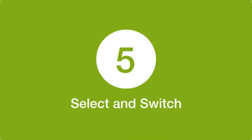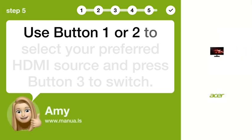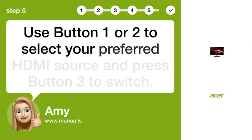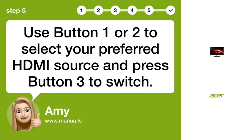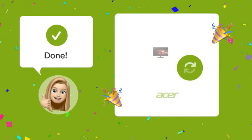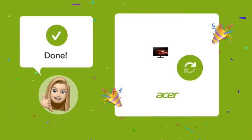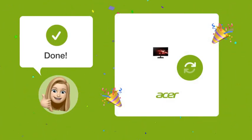Step 5: Select and switch. Use button 1 or 2 to select your preferred HDMI source and press button 3 to switch. After these steps, you should be able to seamlessly switch between HDMI sources on your Acer ED270R monitor.